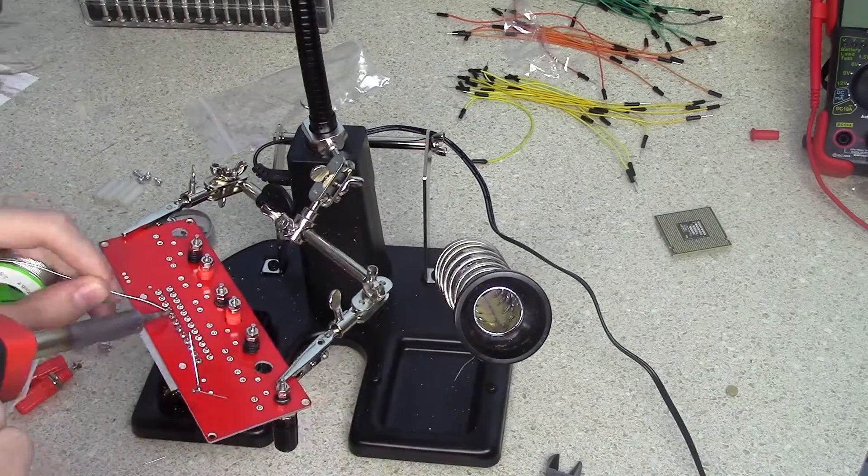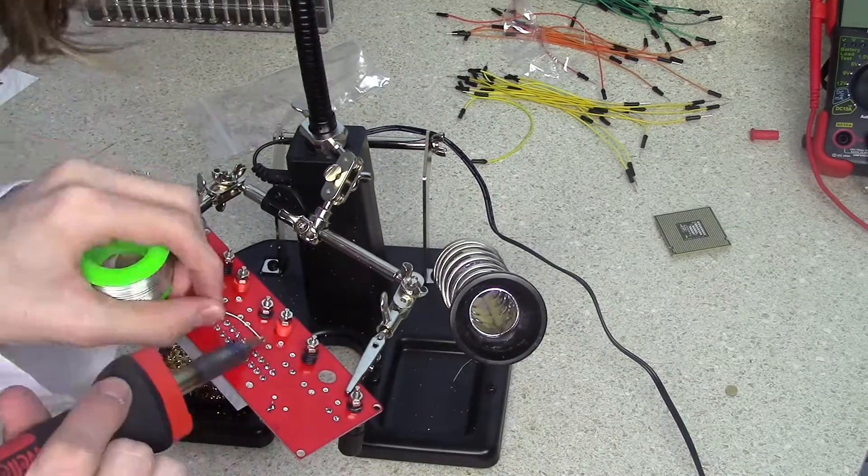Then solder everything into place, including the resistor which goes above the LED.